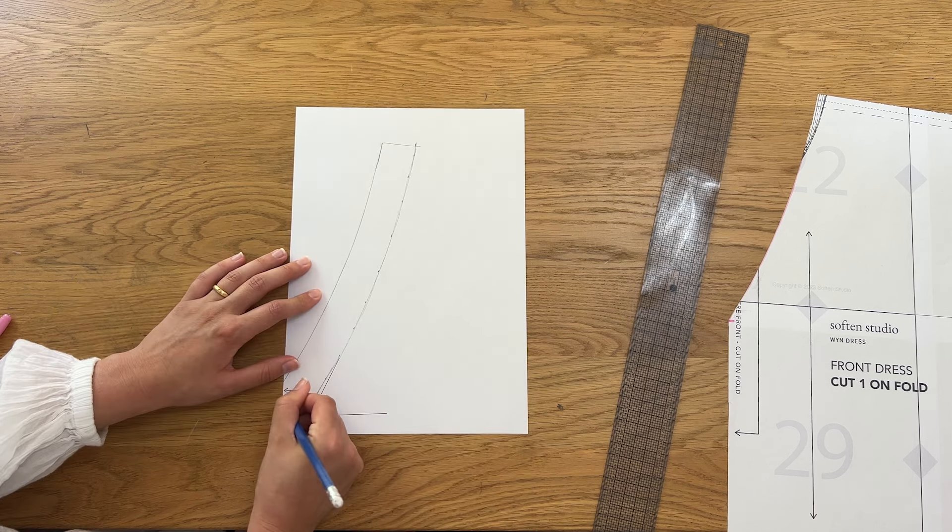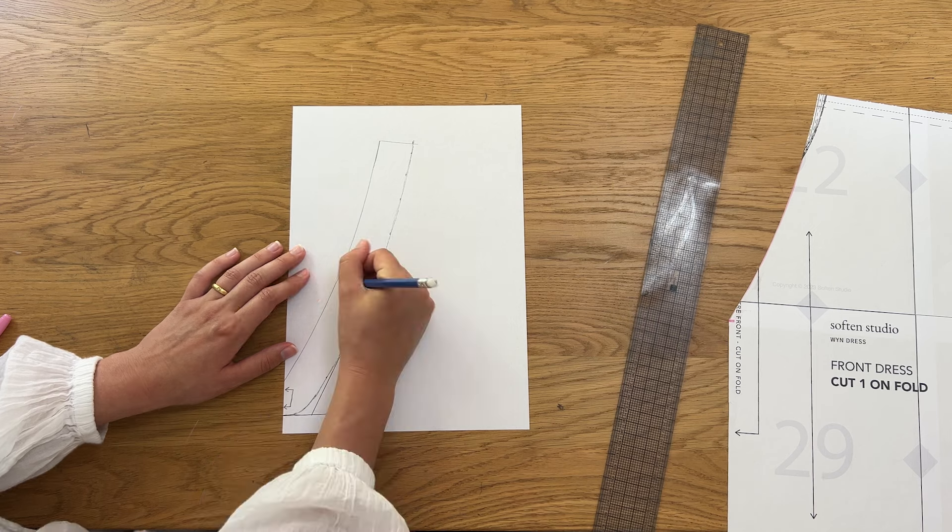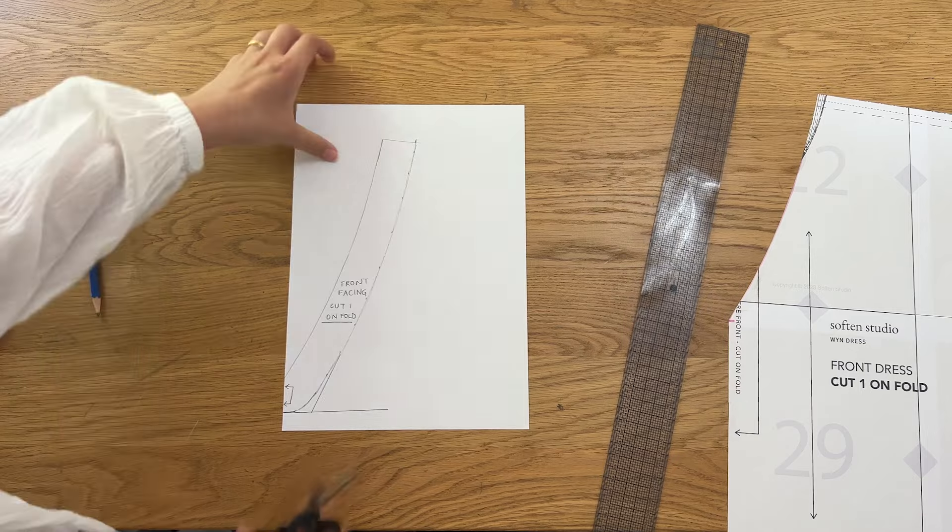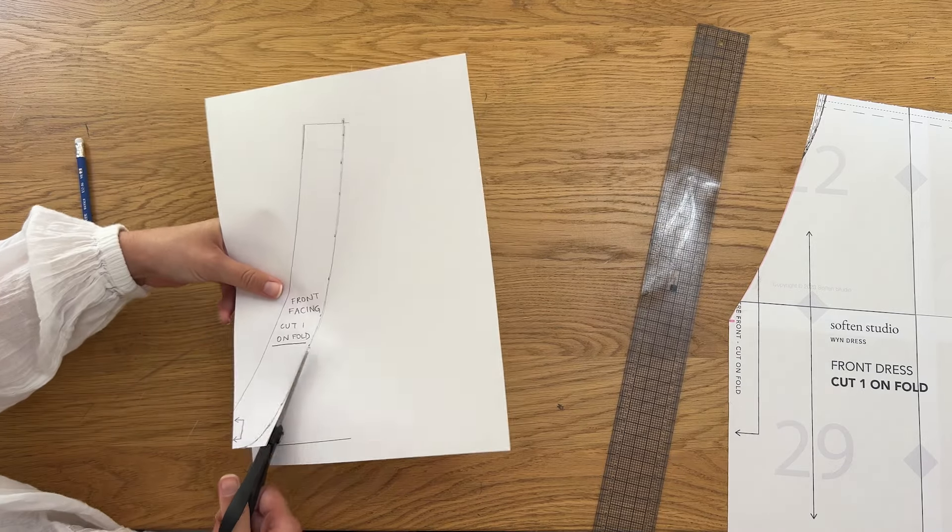Mark in the center front fold on your facing and label your pattern piece. Front facing cut one on fold. Go ahead and cut out your front facing.